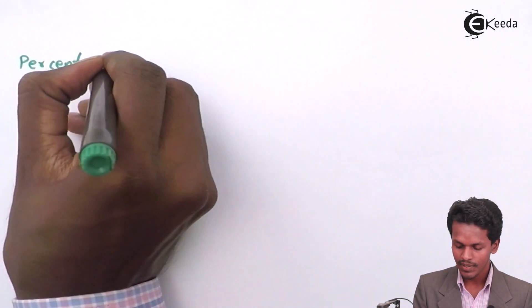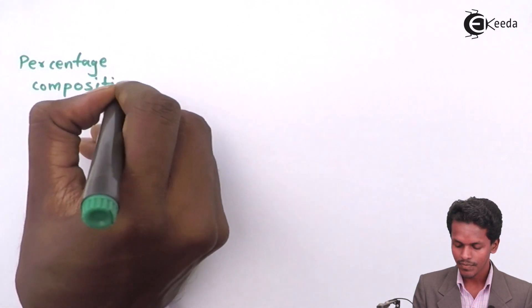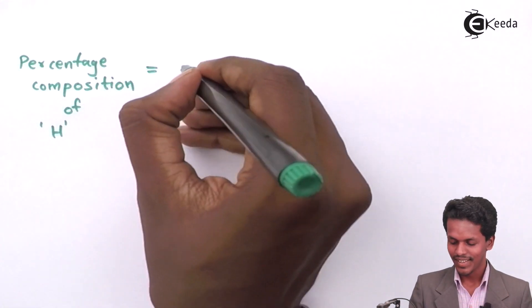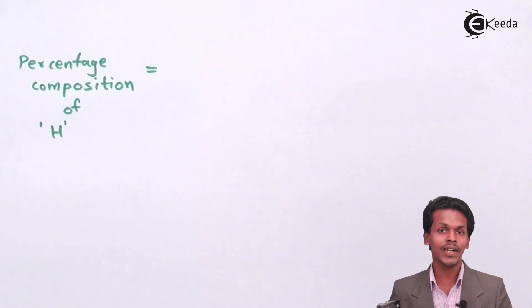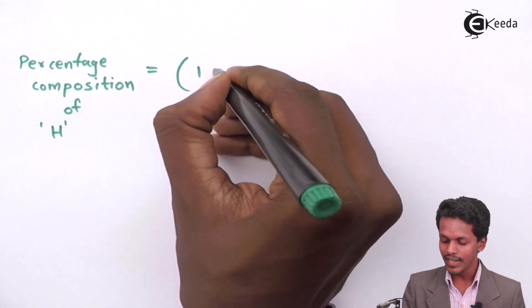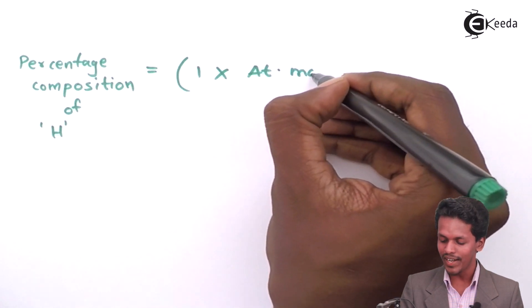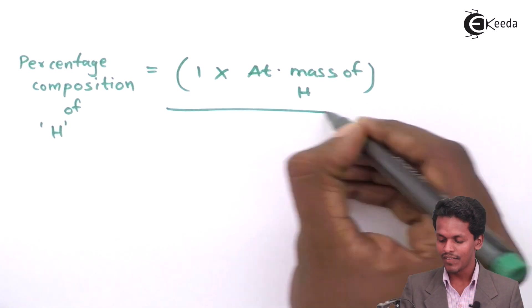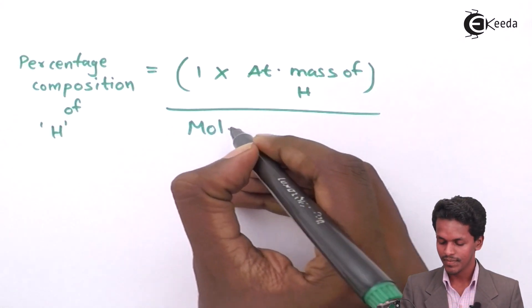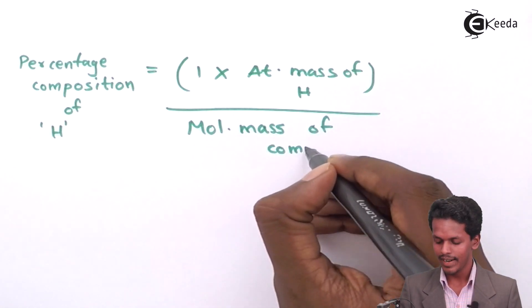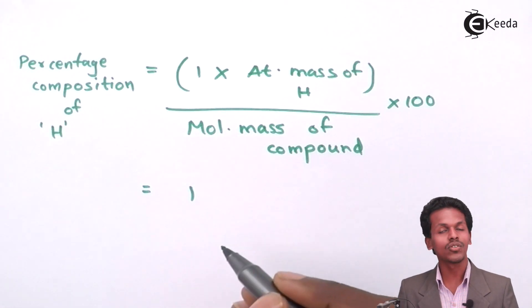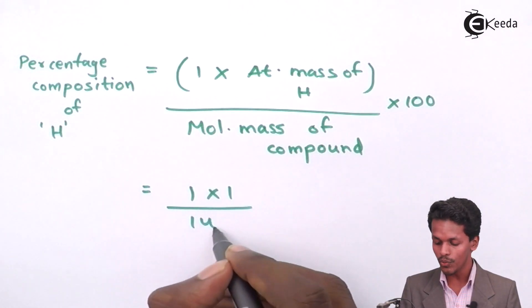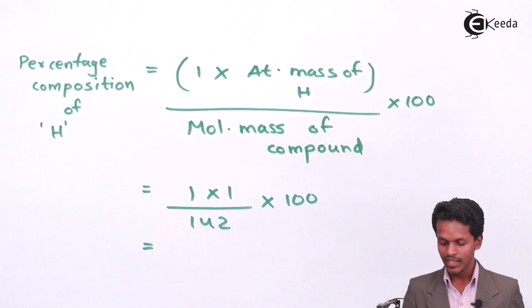The percentage composition of hydrogen: hydrogen is present only one time in the compound, so it is 1 × atomic mass of hydrogen ÷ molecular mass of Na₂HPO₄ × 100. The atomic mass of hydrogen is 1, divided by 142, multiplied by 100.